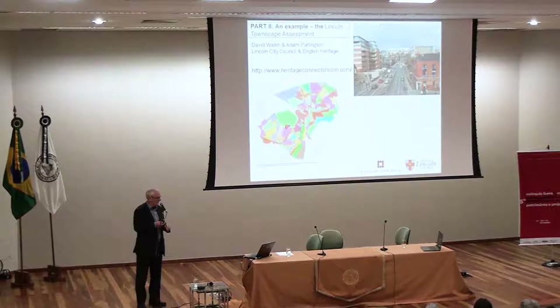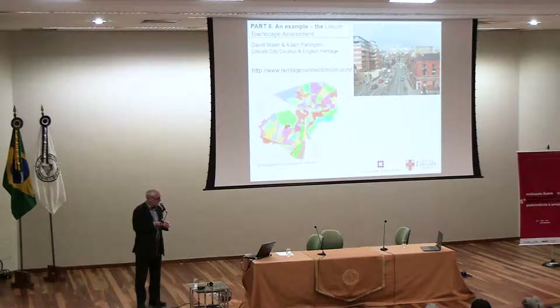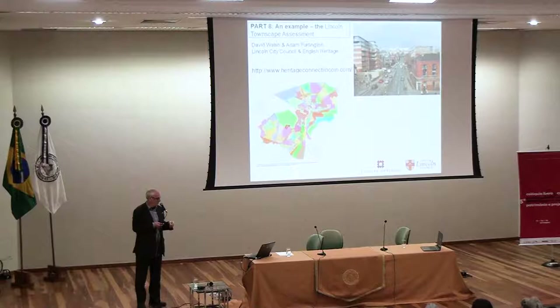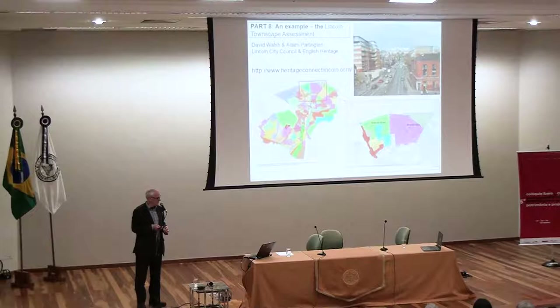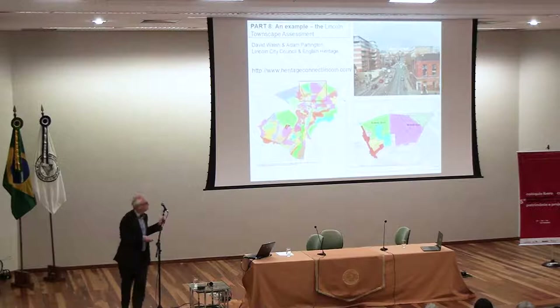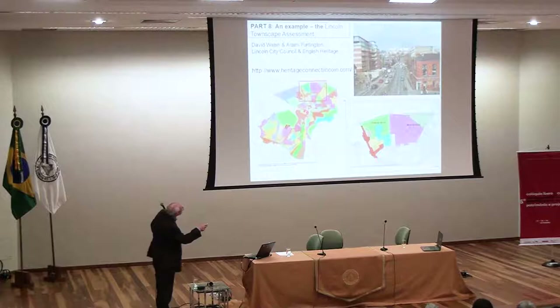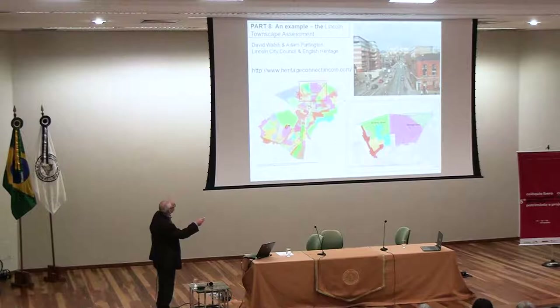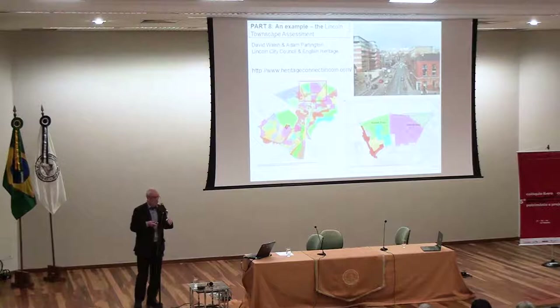Lincoln is mainly known for its cathedral and castle, but it's also a modern city with 19th and 20th century industry and an increasingly growing late 20th and 21st century university — a very diverse town with a 2,000 year history. This project used the approach of character areas, dividing the whole municipality into about 100 areas based on the character of the town — the type of building, the amount of open space, and so on. There's no chronological cutoff: we went to the very edge of the city council and to yesterday in effect.